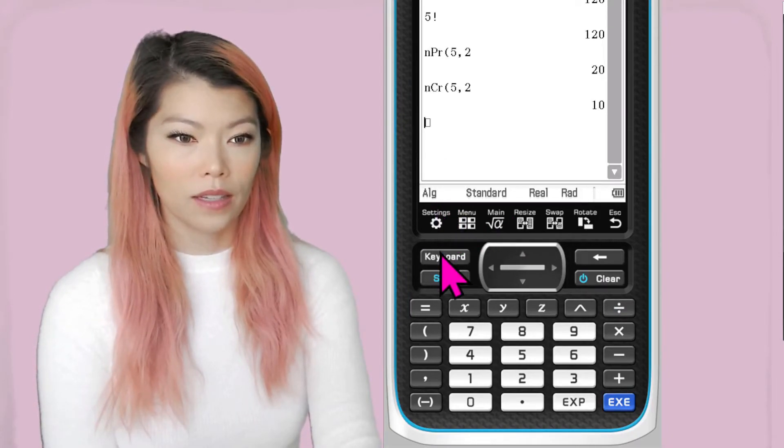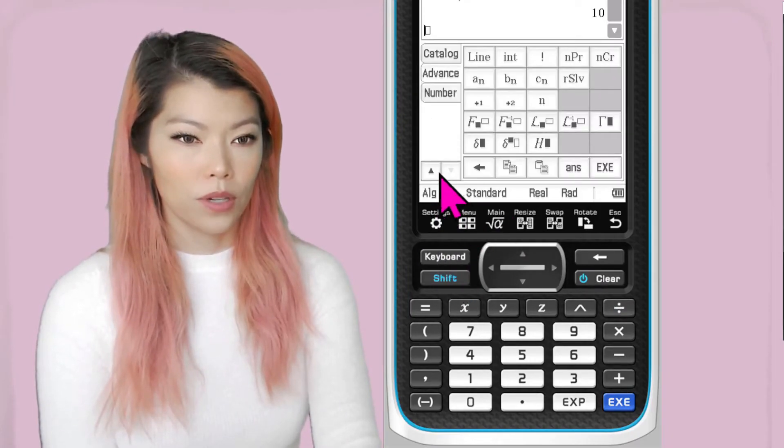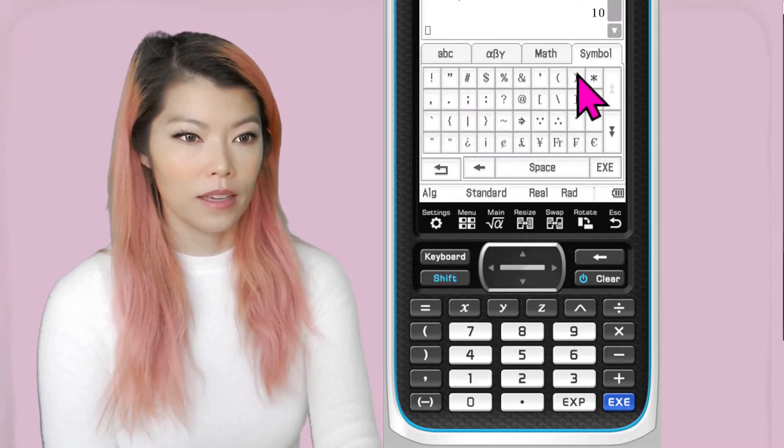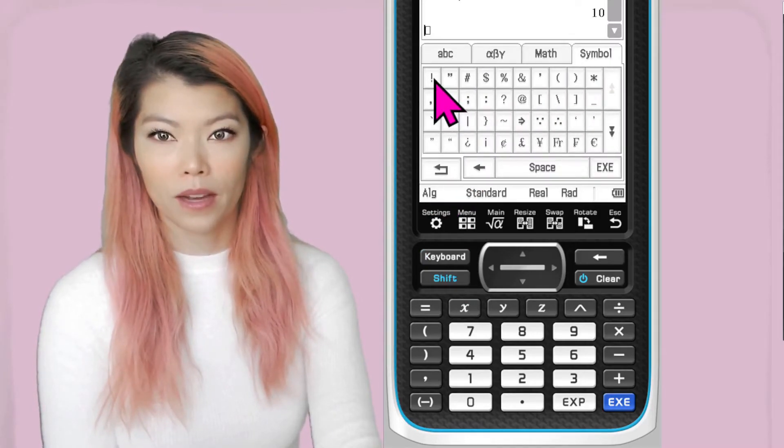so to find the exclamation mark, Keyboard, then ABC, Symbol, exclamation mark is there or factorial.